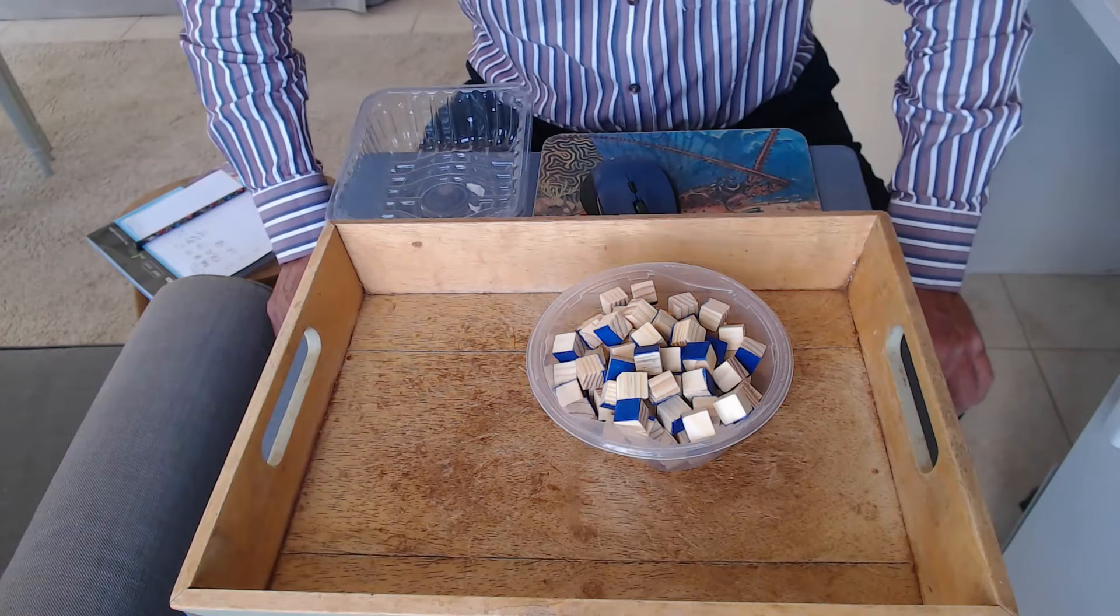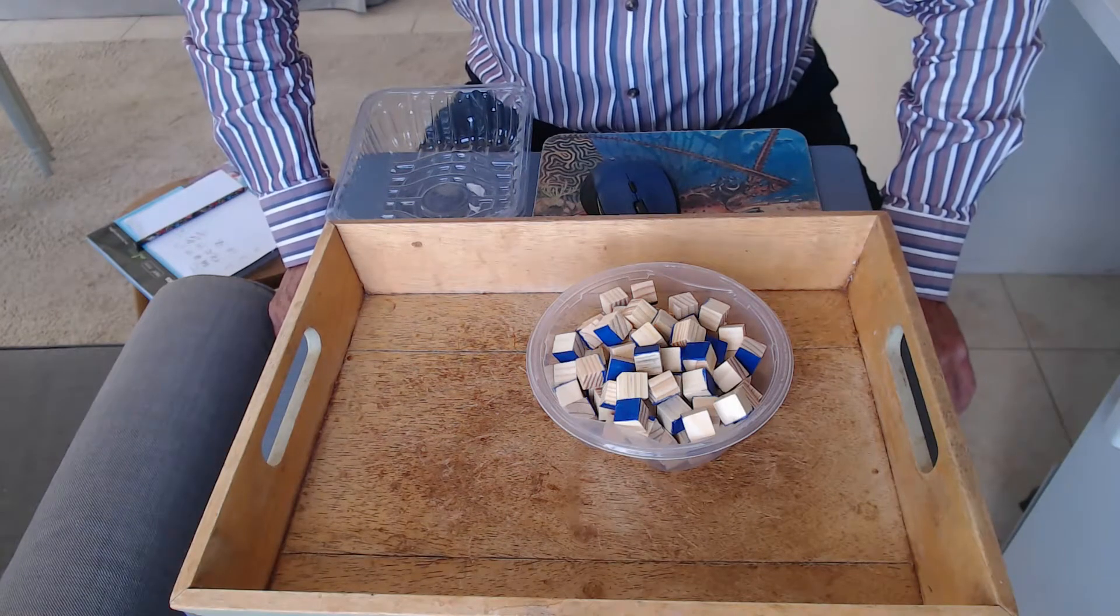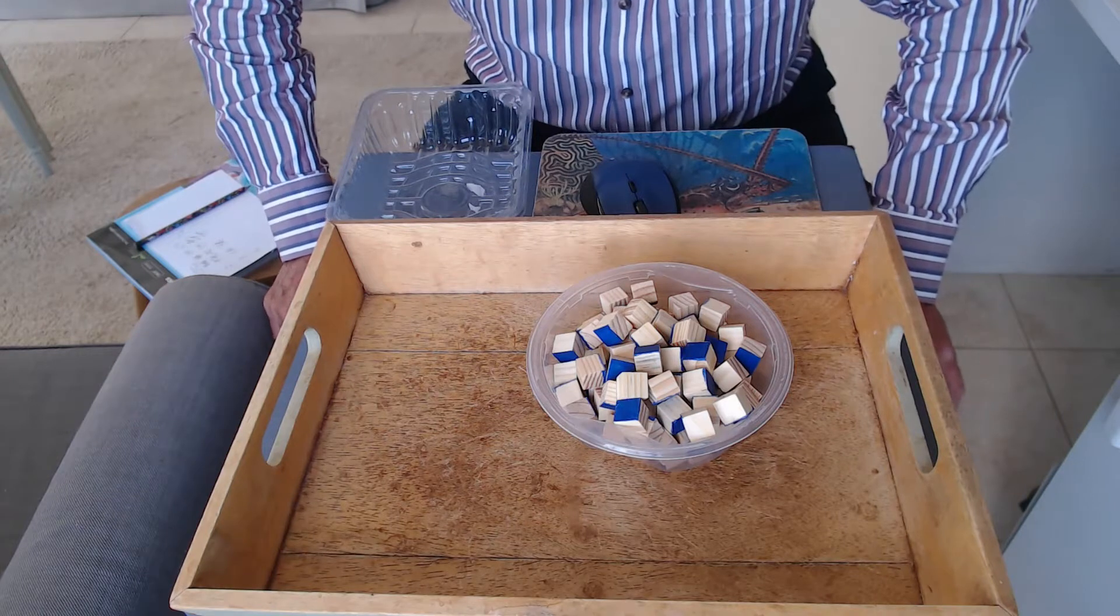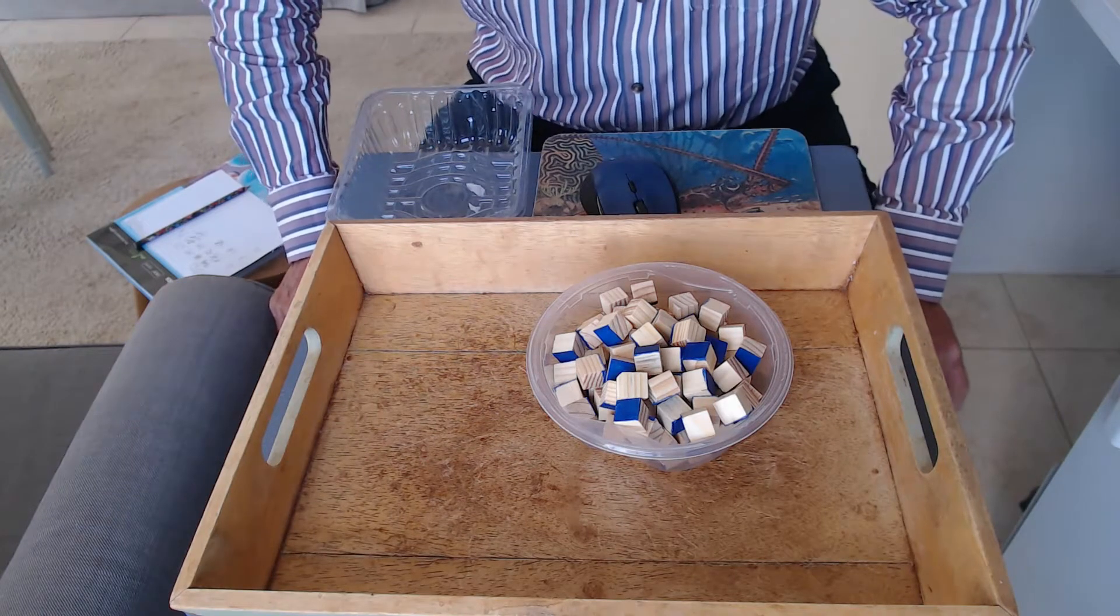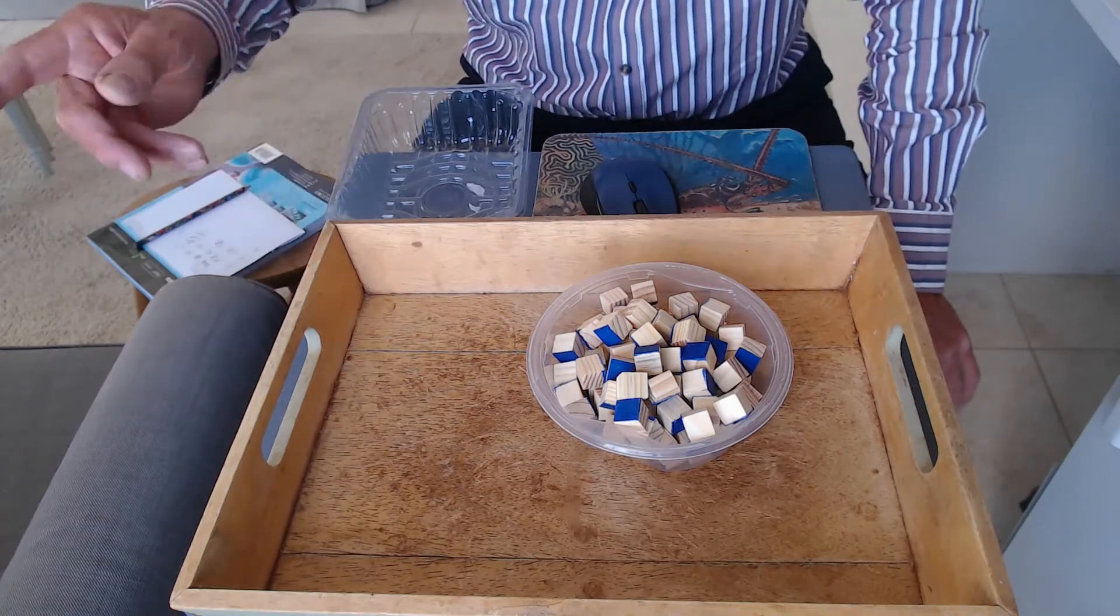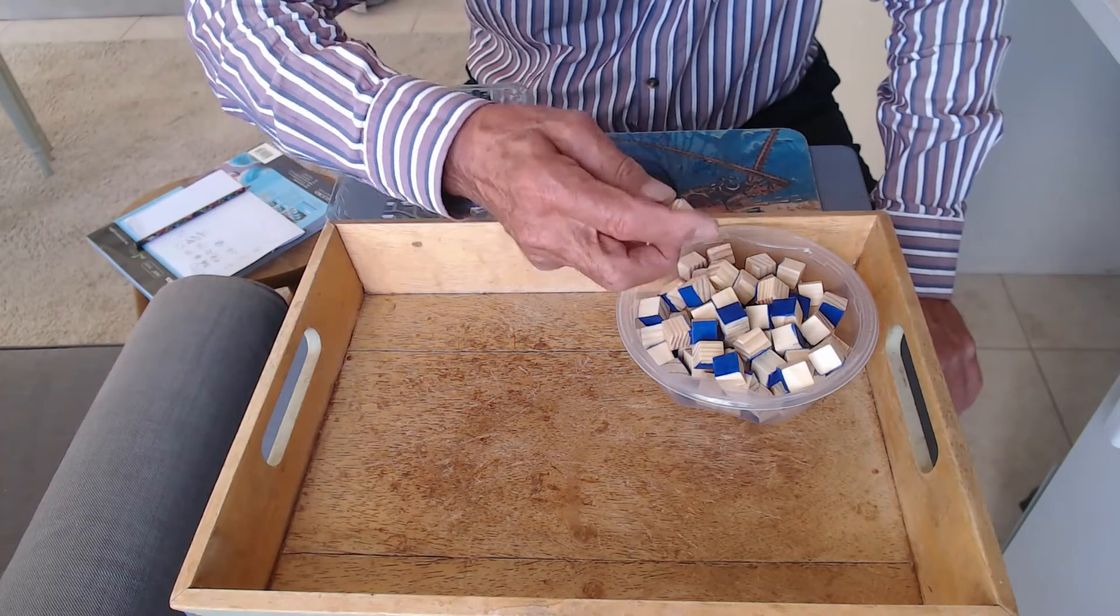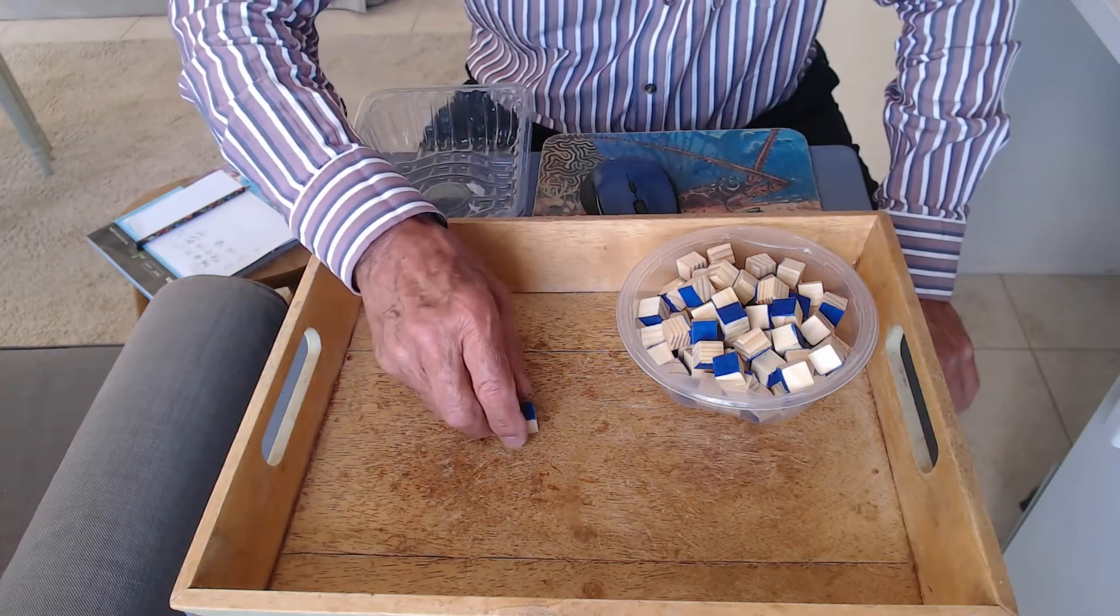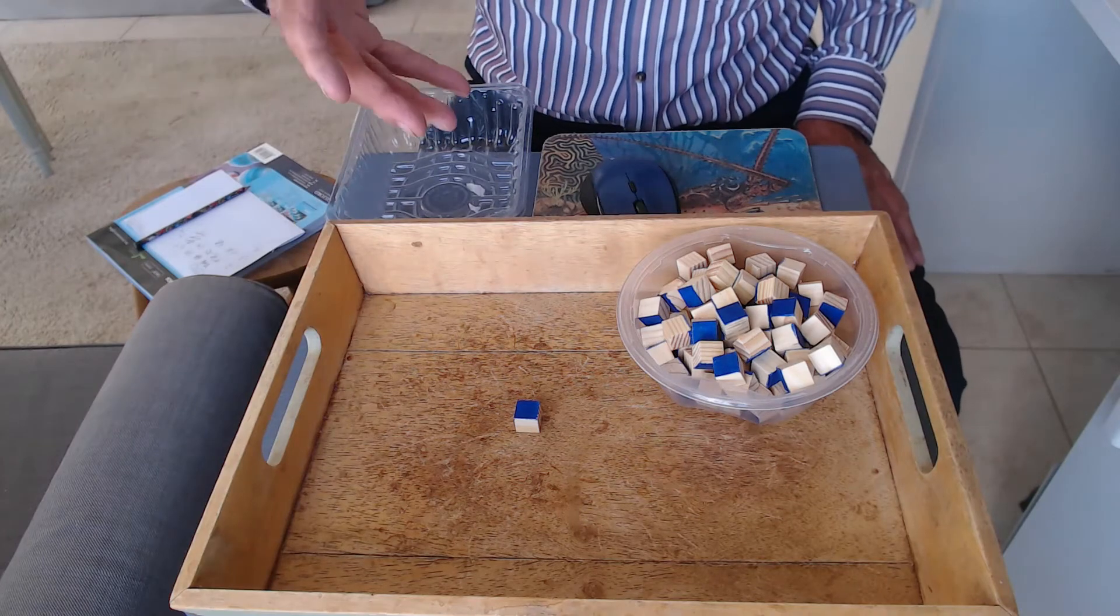As you know, radioactive decay is a random process and this means you cannot predict precisely when a given nucleus will decay by the emission of an alpha particle, a beta particle, or a gamma ray. We're going to simulate radioactive decay using these wooden blocks.